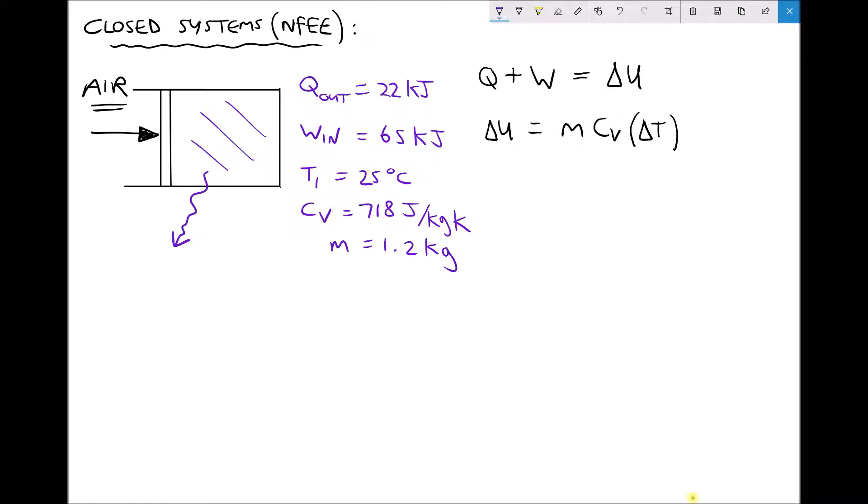A couple of things to note. This time heat's leaving the system, Q out. As we've mentioned previously, if heat or work's leaving the system, then we need to make sure we include that as a negative value. It's coming out of the system.